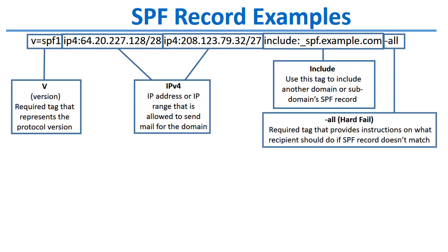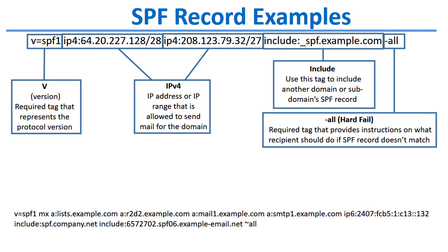Then there's the all tag at the end of the SPF record. This tag can indicate a hard fail or a soft fail. When a dash or minus sign is used in front of 'all', any senders not listed in the SPF record are treated as a hard fail — considered unauthorized, and emails from them should be blocked. A soft fail indicates that you should accept the message but treat it as suspicious.